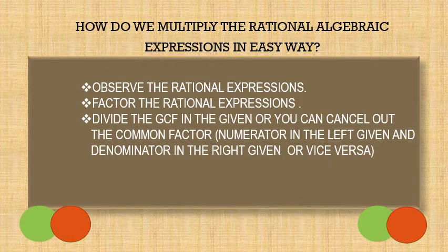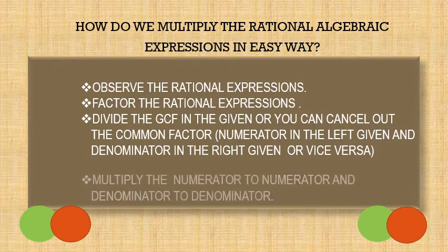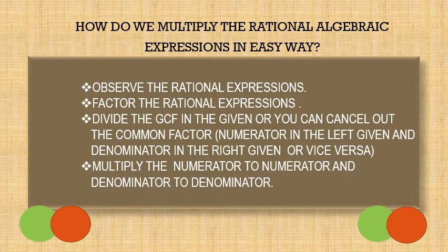Numerator in the left given and denominator in the right given, or vice versa. Multiply the numerator to numerator and denominator to denominator. Then, if you're going to simplify it, just simplify it again if necessary.